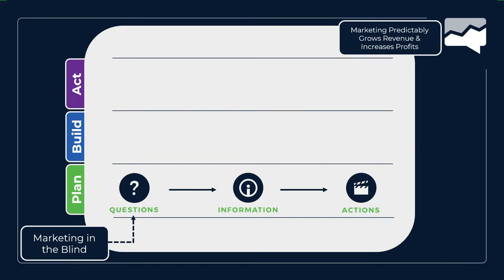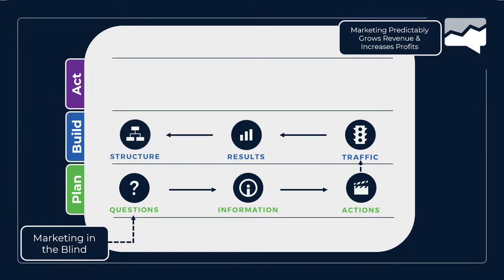You plan out which questions are important to answer, what information you need to get those answers, and what actions you'll take based on the answers you get. With that measurement plan in hand, you move into using tools like Google Analytics, Tag Manager, and Data Studio to first identify your traffic — who, what, and why the traffic is coming — then create and measure for results using what we call ACE goals: Awareness, Completion, and Engagement steps.